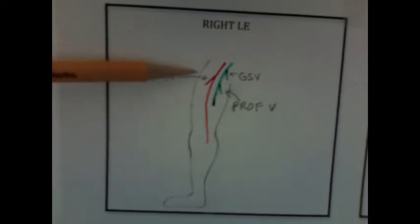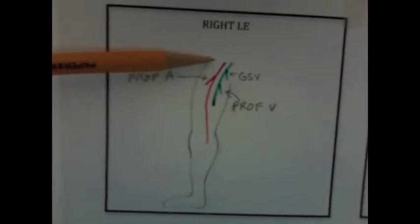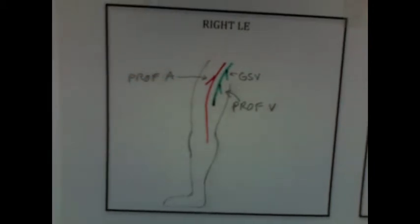And then you'll find the profunda artery, and then the bifurcation of the greater saphenous vein. Everything above that is the common femoral vein. Now if you put the probe down you may see this, a vein all by itself, that is the greater saphenous vein, GSV.